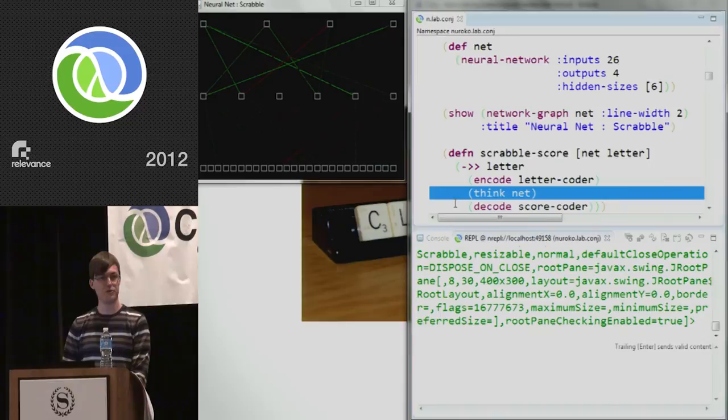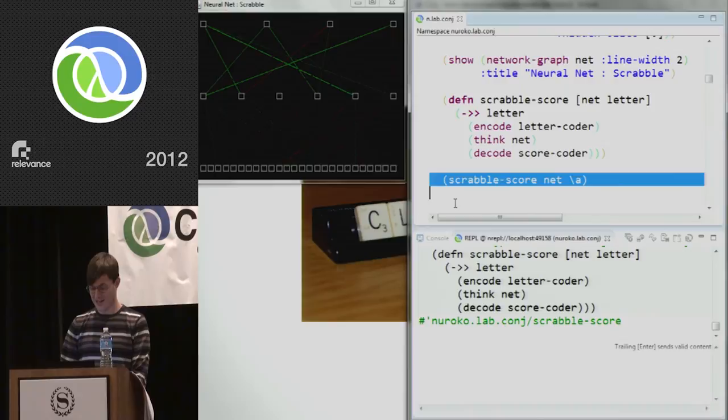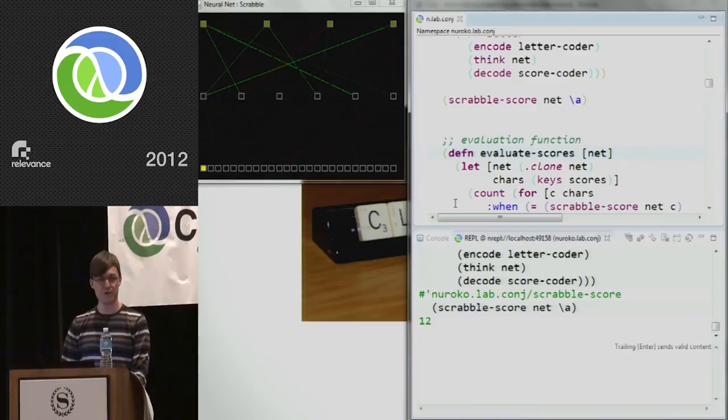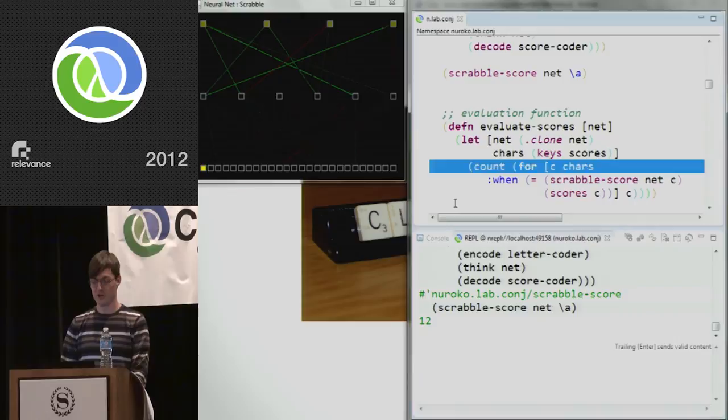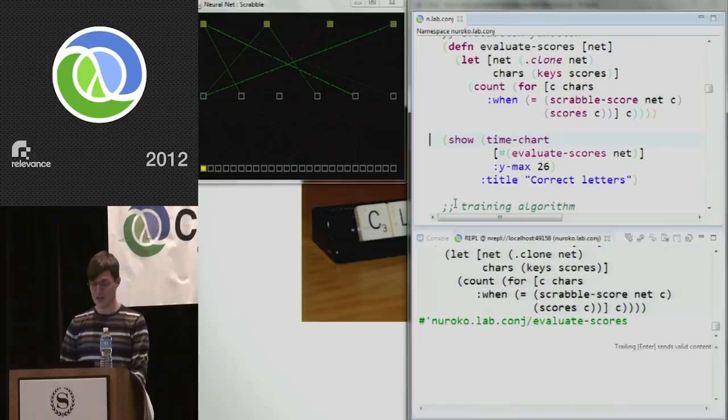The lines between are the weights. The green lines represent positive weights, and the red lines represent negative weights. They're all random at the moment. So the function we're actually trying to produce here is going to take a letter. It's going to code it with the letter coder. It's going to run it through the neural network. Then it's going to decode it with our score coder to get the answer. And if I just try running that function with the letter A at the moment, I get 12. Now 12 is completely wrong. It shouldn't be 12. It should be 1. But that's because we haven't trained the neural network yet. It's just coming out with a random answer.